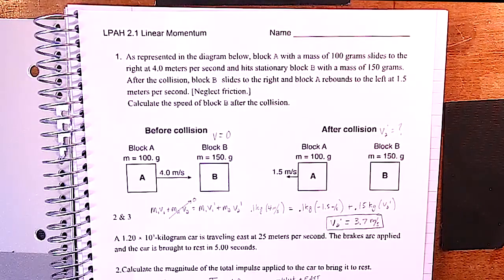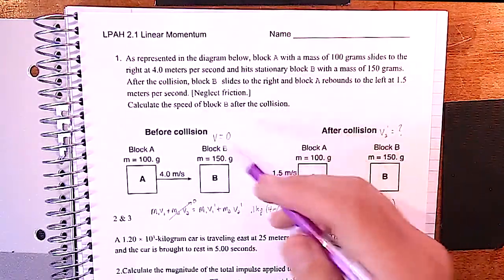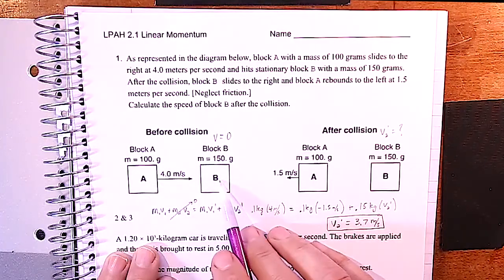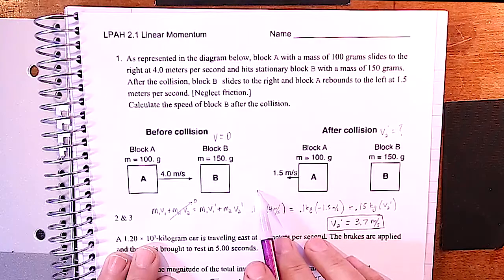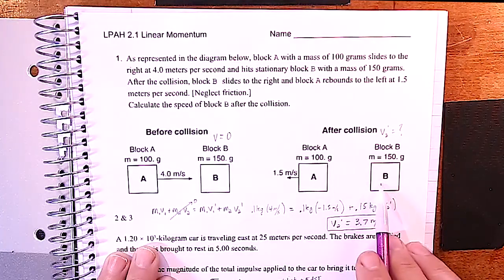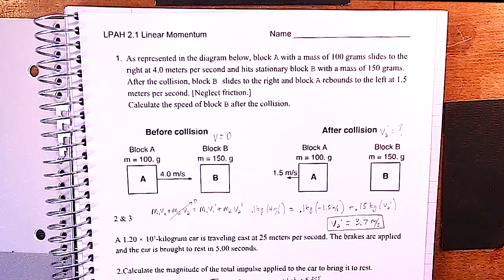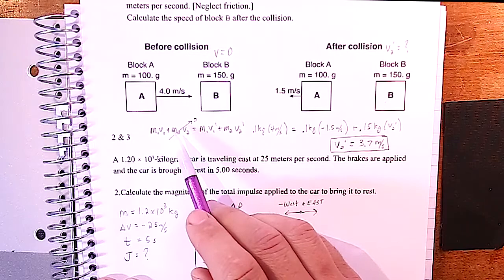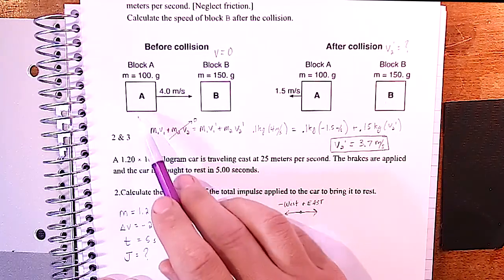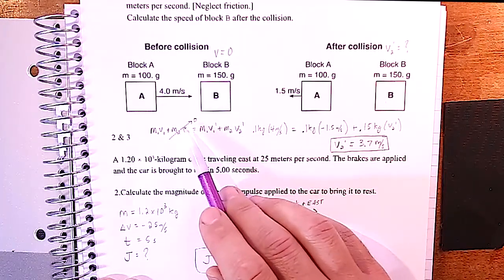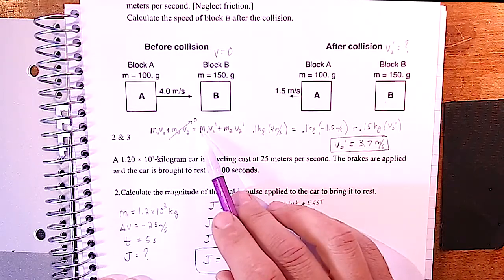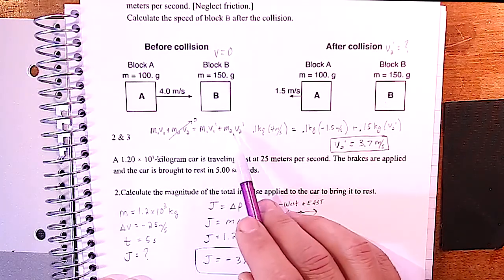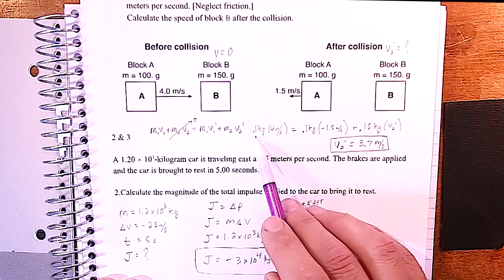This first problem has a lot going on, so I'm just going to go over what happens in the picture. Block A comes in and hits Block B, bounces off. Block B is originally at rest and the question is what happens to Block B after the collision. This is a conservation of momentum problem. We look at all the momentum we start with: m1·v1 for Block A, and Block B which is zero. After the collision, Block A is going in the opposite direction so we need a minus sign, and Block B after the collision is our unknown.